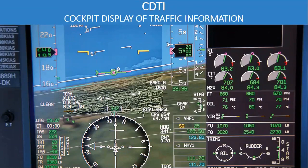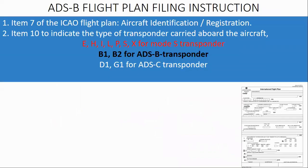Flight plan requirement: when requested by ATS to specify the type of transponder carried aboard the aircraft, pilots shall indicate this by inserting specified characters under item 10 in the flight plan. B1 indicates ADS-B Out capability only. B2 indicates both ADS-B Out and In capability.